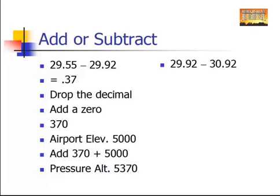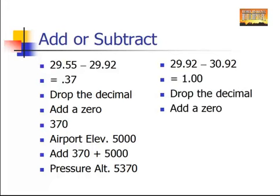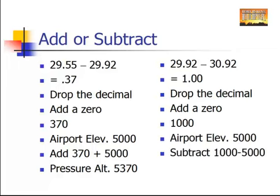Let's work one in reverse. Let's go to a higher than standard pressure setting, let's use 30.92. So we're going to subtract standard 29.92 from the larger number 30.92, and it's going to give us 1.00. We're going to do the same thing again. Drop the decimal, add a zero. That gives you 1,000. Then take your airport elevation again of 5,000 feet and you subtract 1,000 from your airport elevation of 5,000, which gives you a pressure altitude of 4,000.